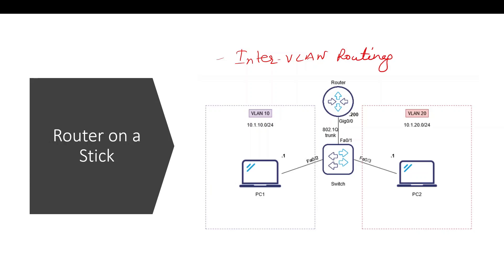Now we are looking at switching concepts. If you have two PCs connected to the same VLAN, you can use the broadcast and share the traffic within the VLAN. In this case, there are two different VLANs — if you have VLAN 10 and VLAN 20.